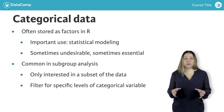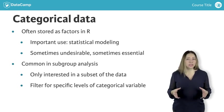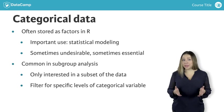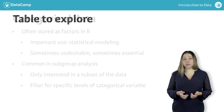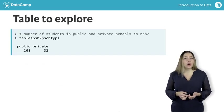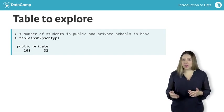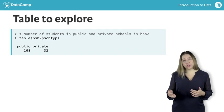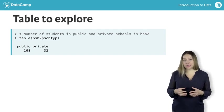Suppose we want to do an analysis of only the students in public schools in the High School and Beyond dataset. Let's first find out how many such students there are. One option for obtaining this information in R is the table function. We apply this function to the column from the data frame that we're interested in, creating a frequency table for it.